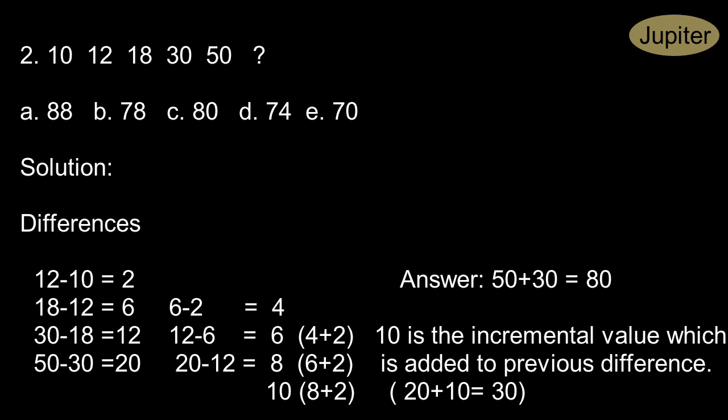If we add the previous difference of 20 to it, we will arrive at the required difference. So that is 20 plus 10, which is 30. 30 is the required difference. If we add 30 to 50, we will arrive at the required number 80. 80 is the missing number. 80 is the answer here.